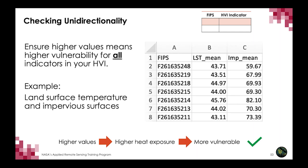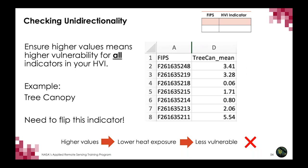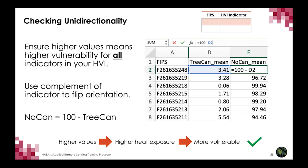Next, check unidirectionality — ensure all variables have higher values leading to higher vulnerability. Land surface temperature works as-is: higher mean LST means higher heat exposure and more vulnerability. But tree canopy requires adjustment: higher tree canopy leads to lower heat exposure and less vulnerability — it's actually protective. To fix this, we take the complement: 100% minus the canopied percentage gives us area without tree canopy. This indicator now has higher values leading to higher heat exposure and more vulnerability, so it will work in our HVI.